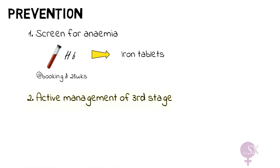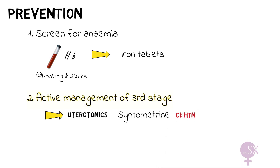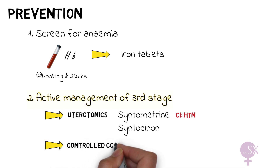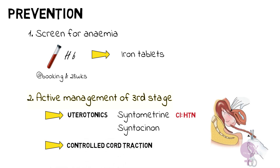More important for prevention is active management of the third stage of labor, performed every time. When the baby is born we administer a prophylactic dose of uterotonics — usually a bolus of syntometrine, a combination of ergometrine and oxytocin. Ergometrine is contraindicated in patients with high blood pressure, so those patients receive only syntocinon, which contains only oxytocin. We also perform controlled cord traction when delivering the placenta, rather than allowing expectant management.